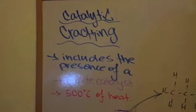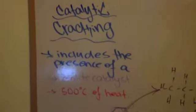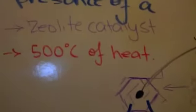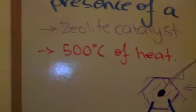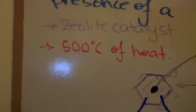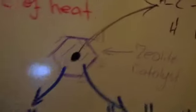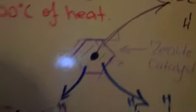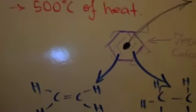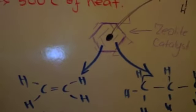This is the final type of cracking, called catalytic cracking. This involves a zeolite catalyst and 500 degrees of heat. As you can see, 250 degrees have been replaced by a catalyst. Inside the zeolite catalyst, you have a decane molecule. With the heat, it will break the bonds, but it won't form any radicals. It will do it a lot faster and a lot more efficiently.